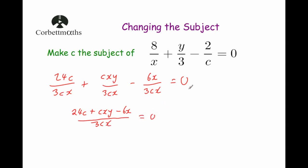What's interesting is this question said equals 0. It could have equaled a number like 1 or 2, but we've got equals 0. If a fraction equals 0, we know that the numerator must equal 0, because 0 divided by anything is 0. We could also have multiplied both sides by 3cx — either way, 0 times 3cx is still 0. So: 24c plus cxy subtract 6x equals 0.